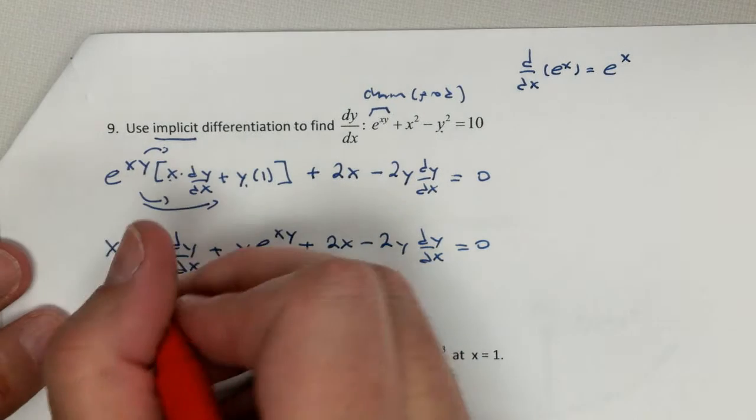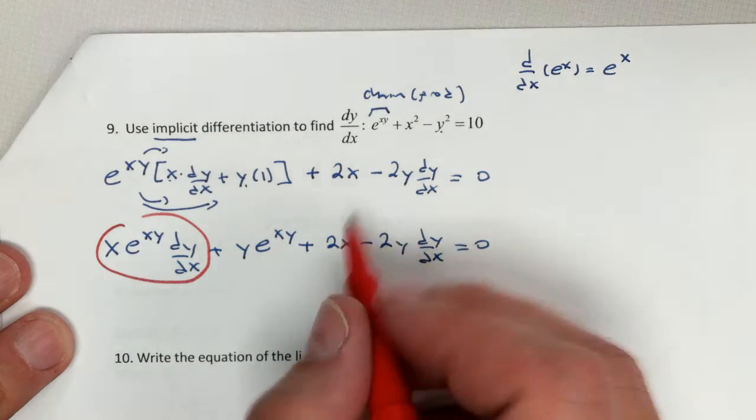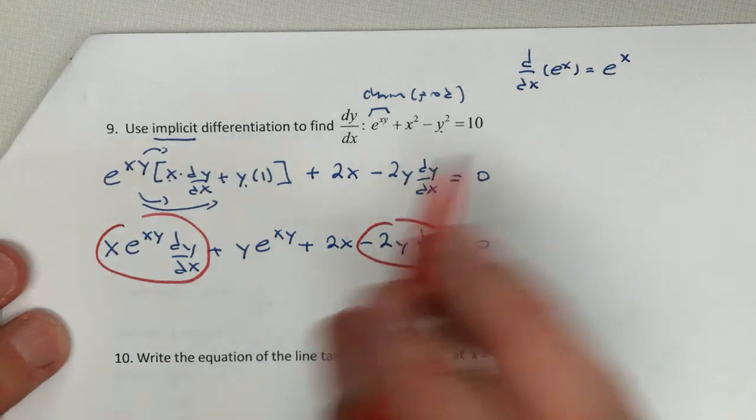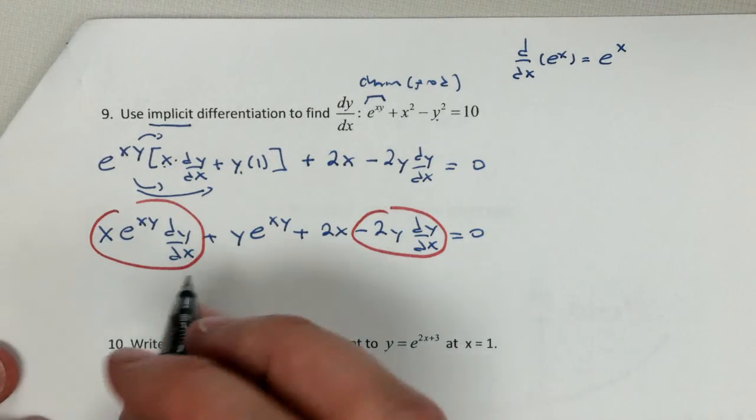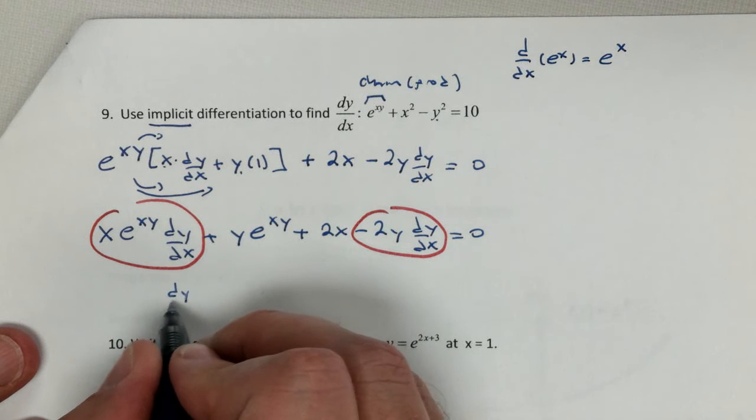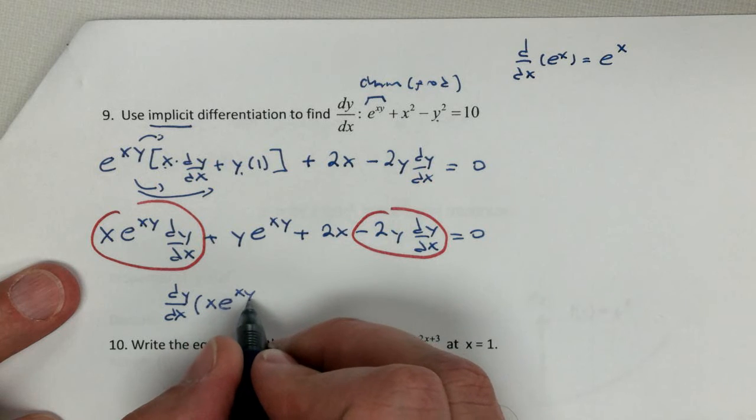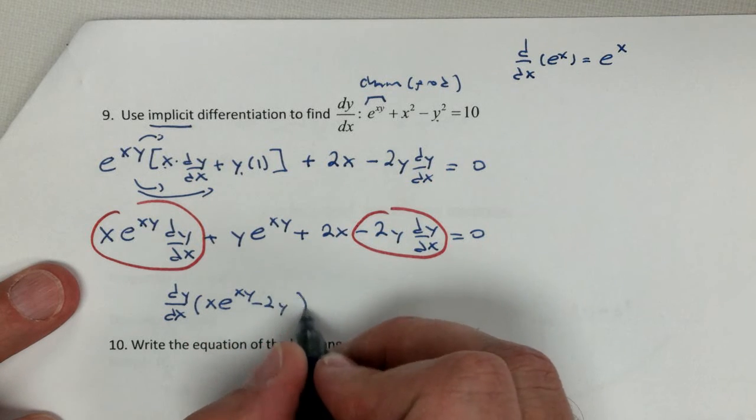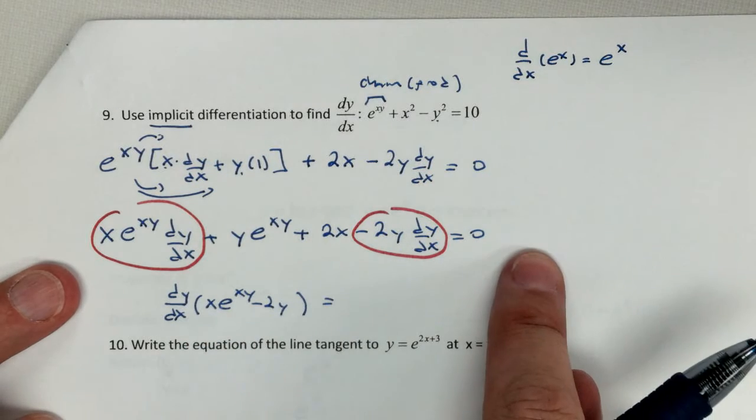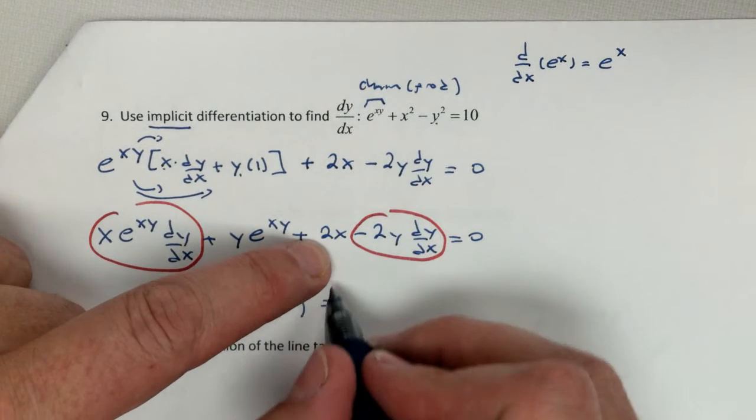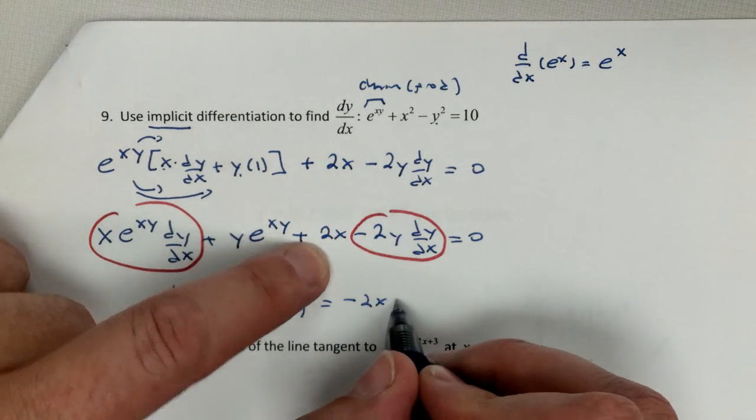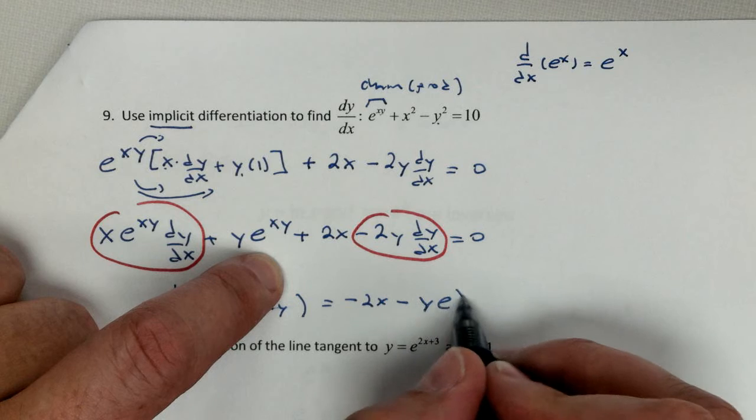Our rule, anything that has a dy dx stays. Everything else is going to go away. So that's going to leave us with dy dx times x e to the xy minus 2y. Everything else is going to go to the other side, so I've got to switch their signs. So this will become minus 2x minus y e to the xy.